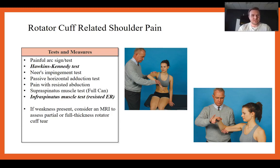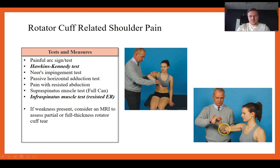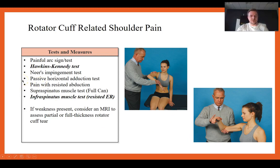Tests and measures: patients present with a painful arc sign. Another big one is the Hawkins Kennedy test. The infraspinatus muscle test — the examiner holds the arm up slightly into scaption and resists external rotation; if it's painful, that's a positive test. Weakness may indicate a full thickness rotator cuff tear. Neer's impingement test, passive horizontal adduction, pain with resisted abduction, and resisted full can or supraspinatus testing are also used.